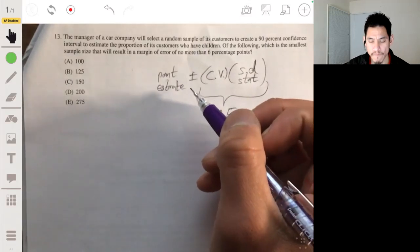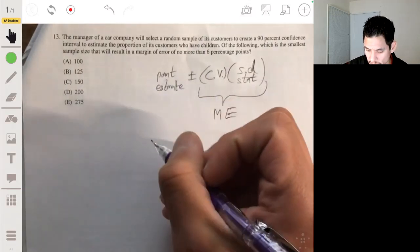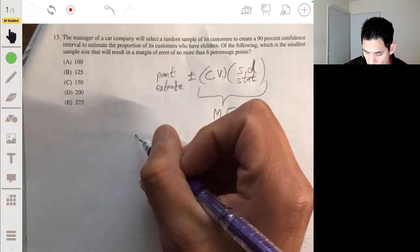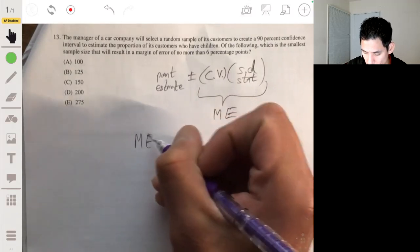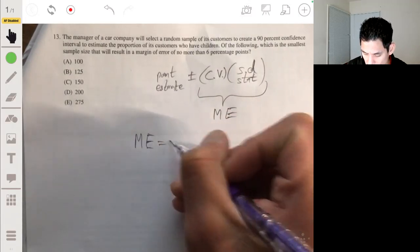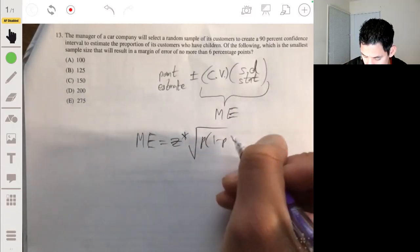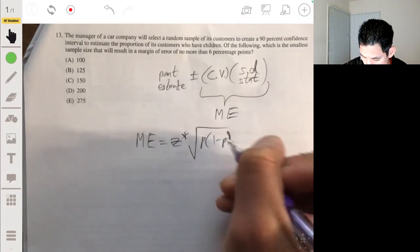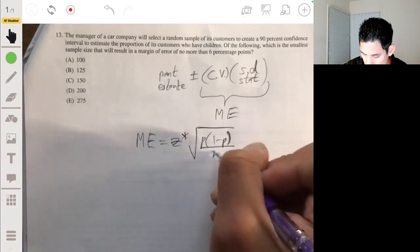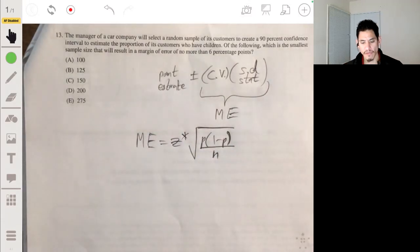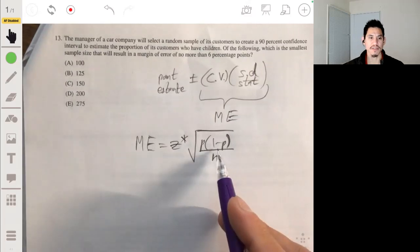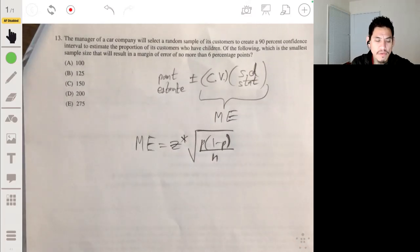Okay, since we have proportion, the formula for the margin of error will be Z star times the square root of P times one minus P over N. And again, you have a formula sheet, you don't have to memorize it, this will be in your formula sheet if you forget it.